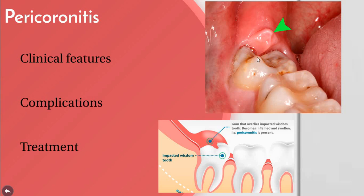Gently flush the area with warm water to remove debris and exudate. Swab the area with antiseptic after elevating the flap with a scaler, remove the underlying debris, and flush with warm water. An anteroposterior incision can be given in some cases with a number 15 blade to release the flap. Antibiotics can be prescribed after the acute symptoms subside.